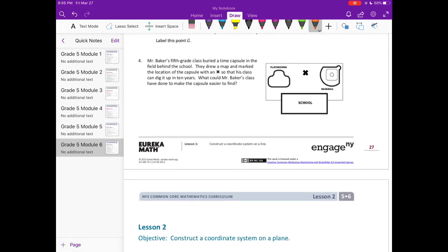Mr. Baker's 5th grade class buried a time capsule in the field behind the school. They drew a map and marked the location of the capsule with an X so that his class can dig it up in 10 years. What could Mr. Baker's class have done to make the capsule easier to find? So what I see is it's just a map, and they put an X in the spot where they buried it.